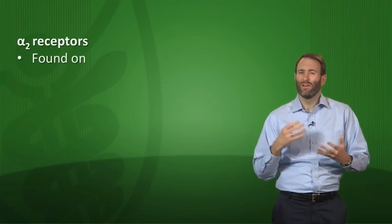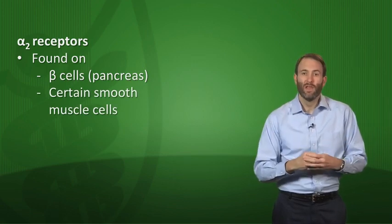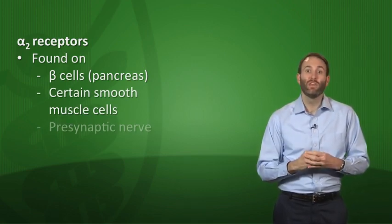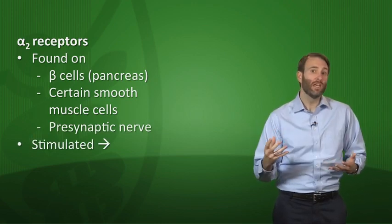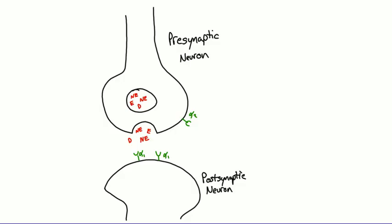Alpha-2 receptors are a bit different. You find them on a few effector organs like the beta cells of the pancreas and certain smooth muscle cells. Most importantly, alpha-2 receptors are on the presynaptic nerve itself. When stimulated, they inhibit further norepinephrine release — a negative feedback mechanism. Because they're also present on the pancreas, they can inhibit insulin release as well.